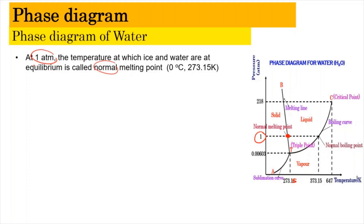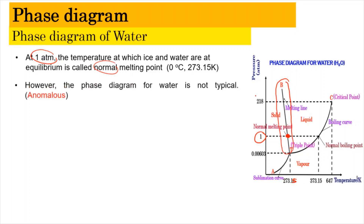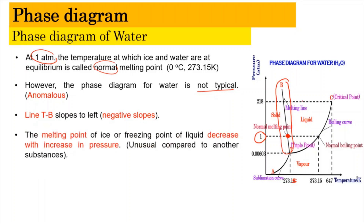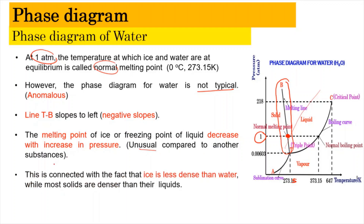For the phase diagram of water, you can see a difference in the T-B line. This T-B line has a negative slope, where it is slanted to the left. This diagram is not typical — it is anomalous. This unusual property is connected with the fact that ice is less dense than water.